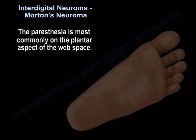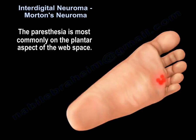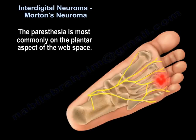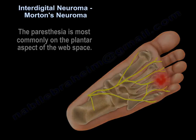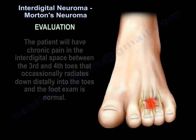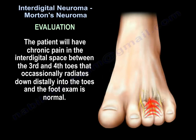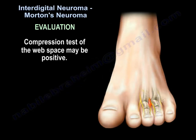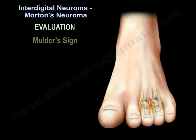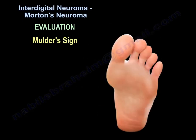Paresthesia is most commonly on the plantar aspect of the web space. The patient will have chronic pain in the entire space between the 3rd and 4th toes that occasionally radiates distally into the toes, and the foot exam is otherwise normal. Compression test of the web space may be positive, and Mulder's sign can help in the diagnosis.